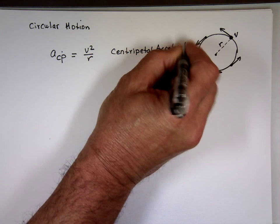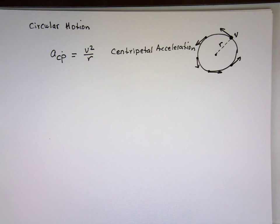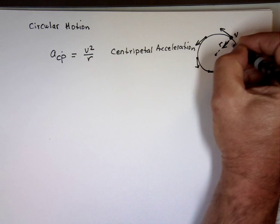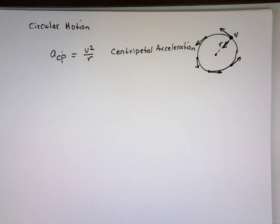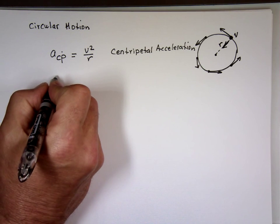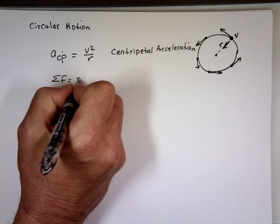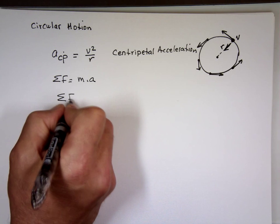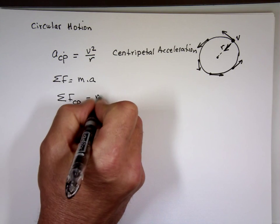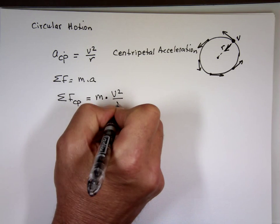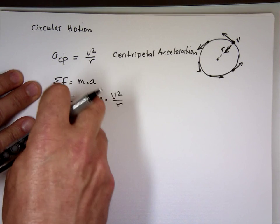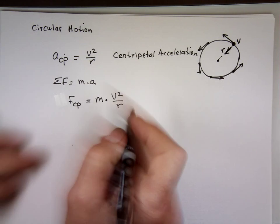Centripetal acceleration always points toward the center. By Newton's second law, the net force equals mass times acceleration. So the centripetal force F_cp = m × V²/R, or MV²/R.